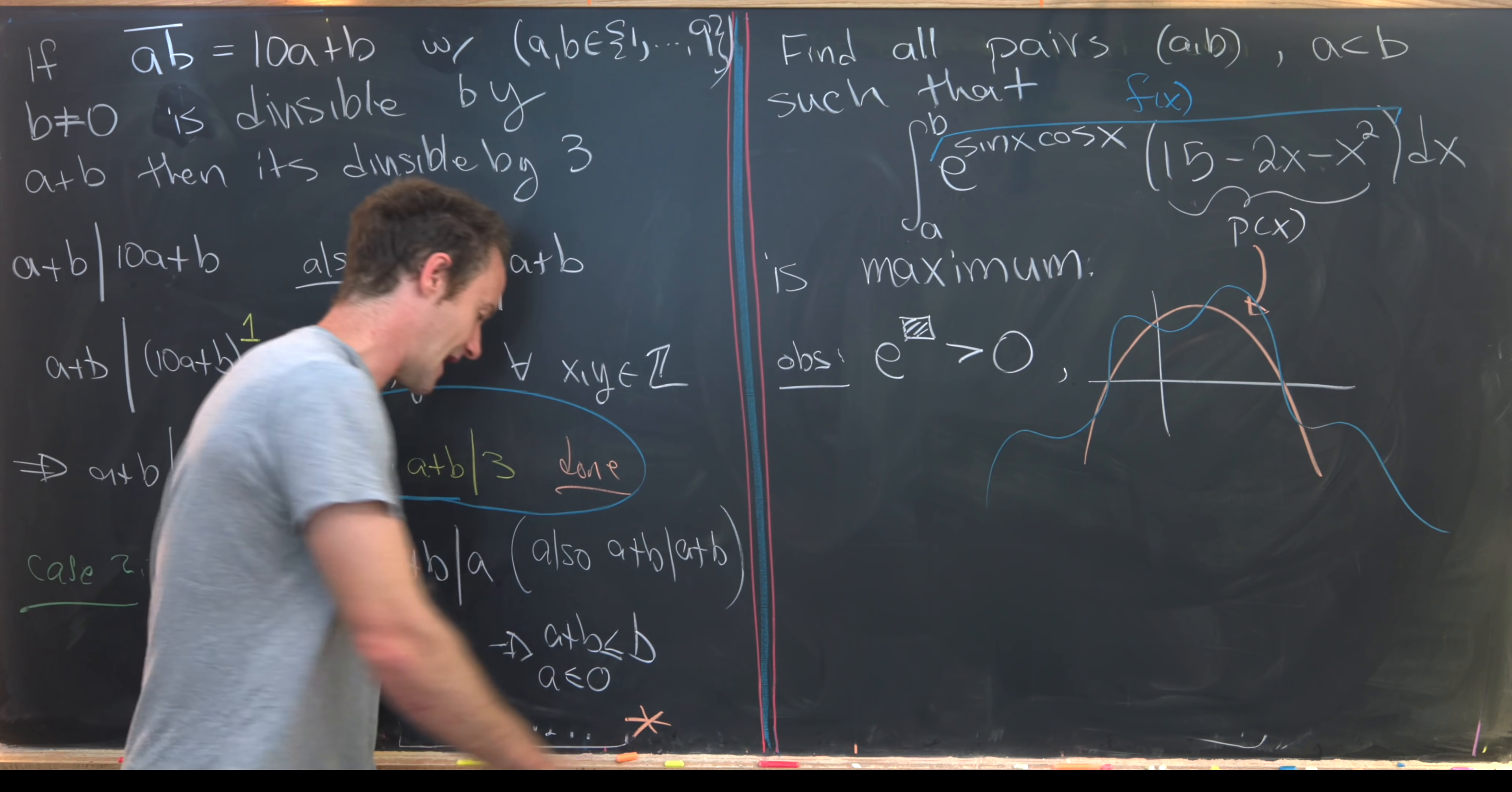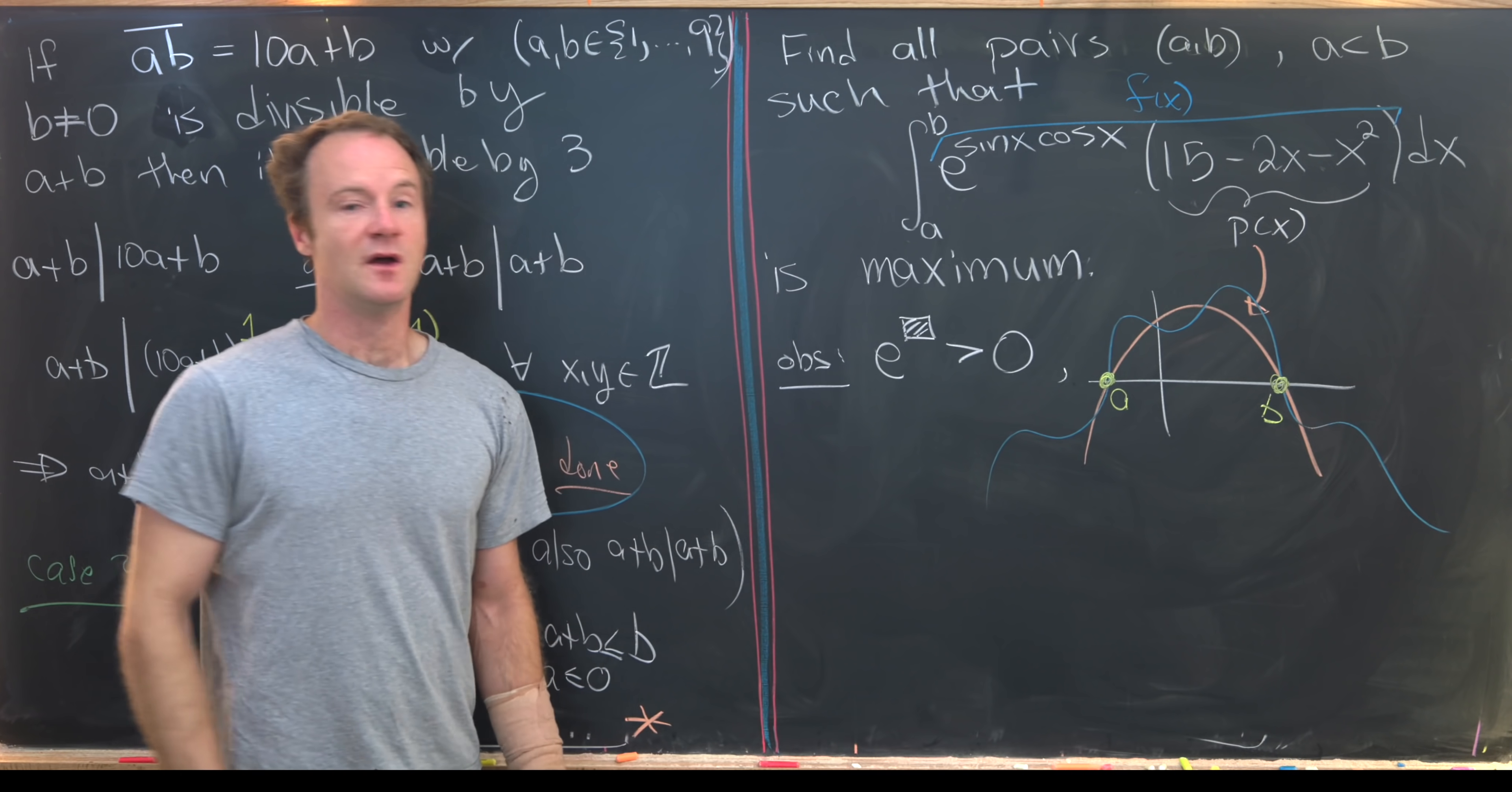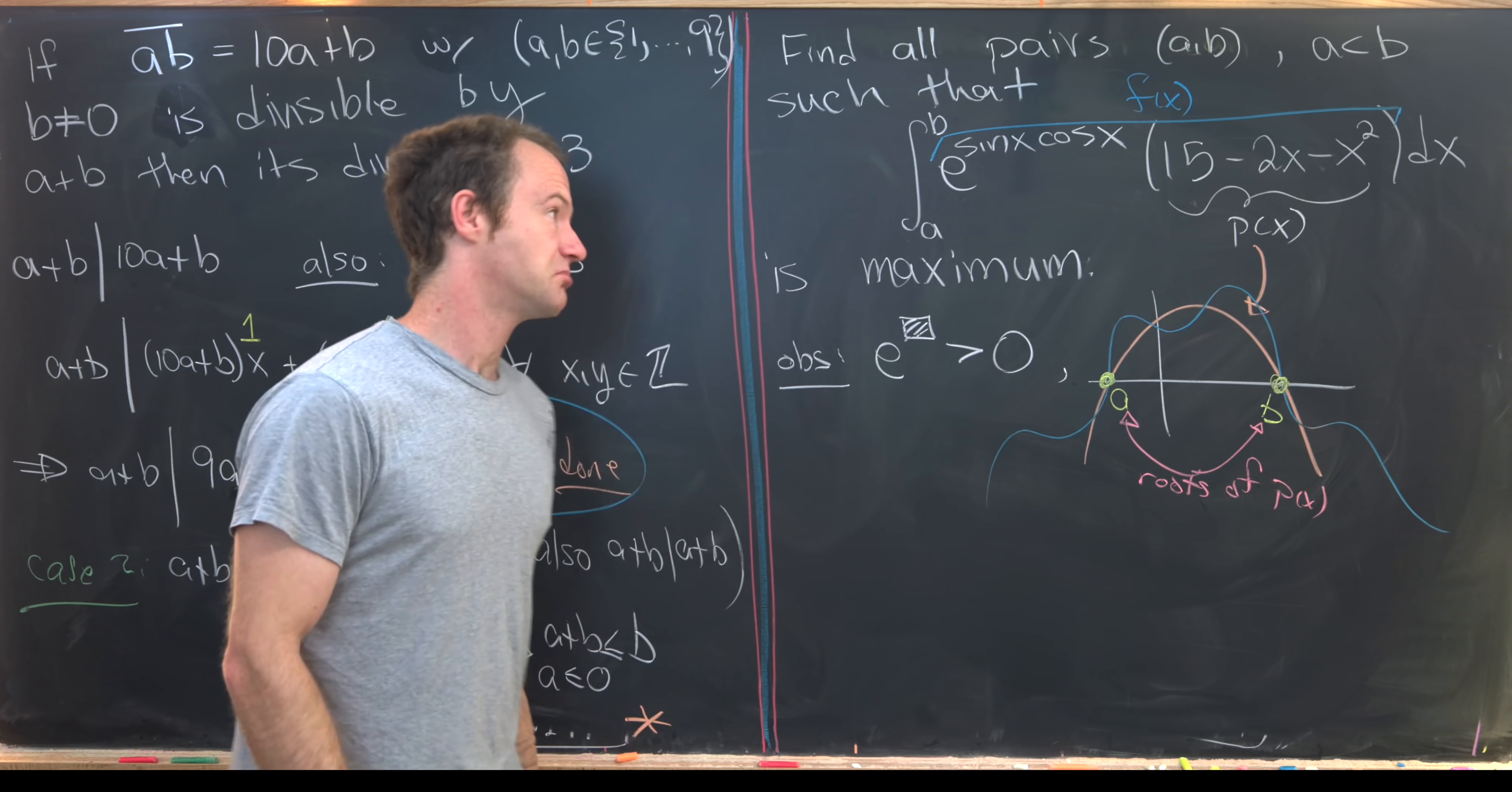So what values of a and b will maximize this integral? Well, let's keep in mind that the integral is the area under the curve. So maximizing the area under the curve would be picking endpoints. So we're only calculating the area above the x-axis and not the area below the x-axis. So that would be like this endpoint here and this endpoint here. But notice that these will be exactly the roots of our polynomial.